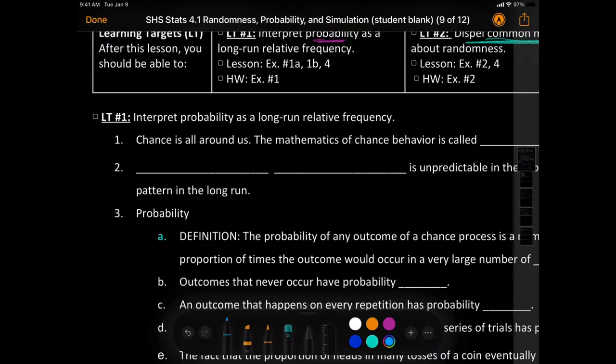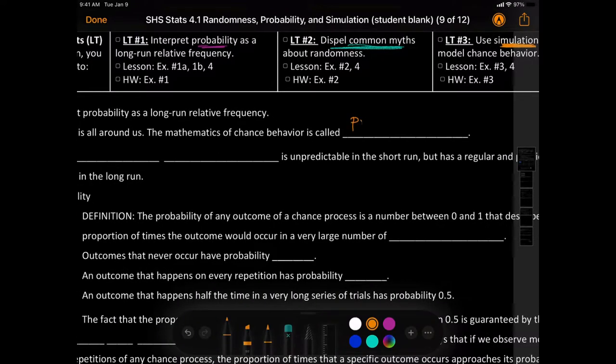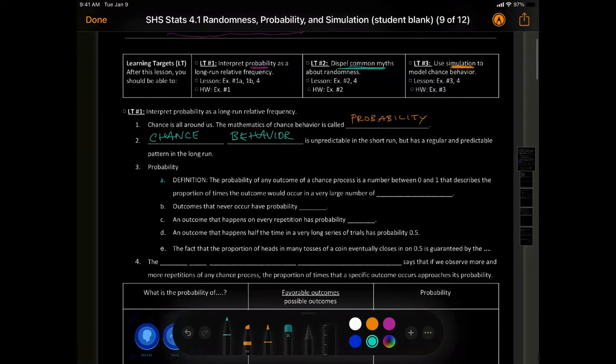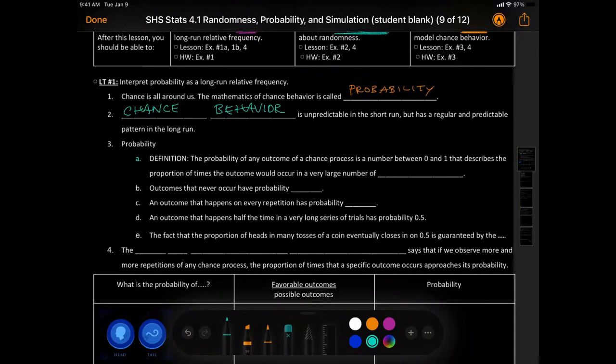Alright, let me switch my pens here. Chance is all around us. The mathematics of chance behavior is called probability. Number two, chance behavior is unpredictable in the short run, but has a regular, predictable pattern in the long run. Number three, probability. I'm just going to read the definition. The probability of any outcome of a chance process is the number between zero and one.